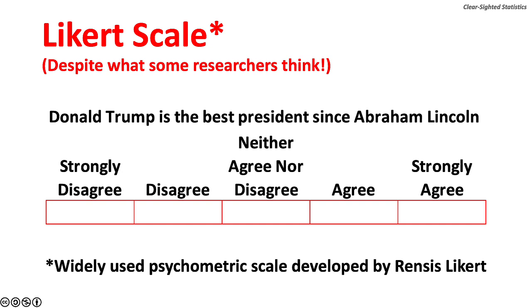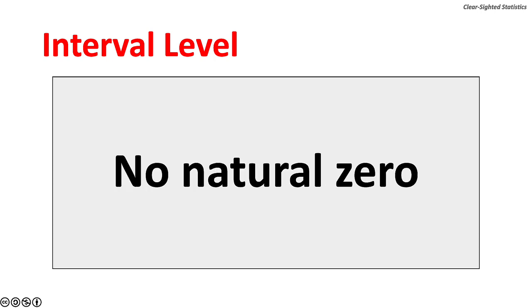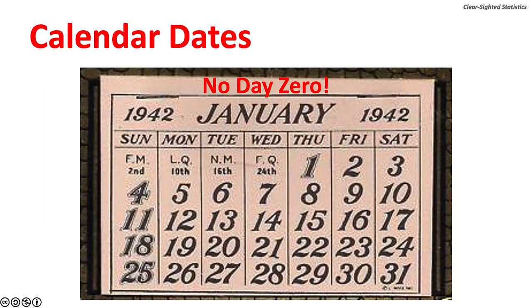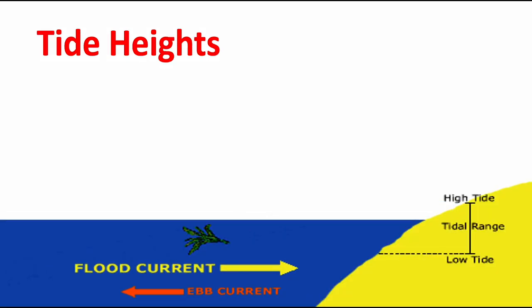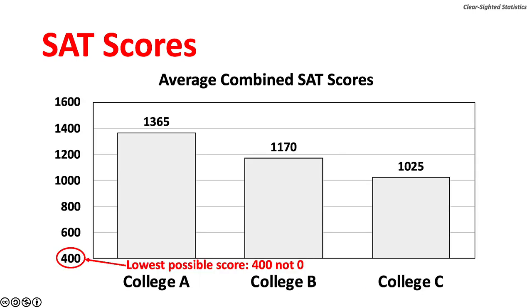The interval level is the first of two quantitative measures. It is like the ordinal scale, but quantitative differences between data values can be measured. The interval scale lacks a natural zero. Temperature measured on the Fahrenheit and Celsius scales are the classic examples of interval data. Because these scales lack an absolute zero, we cannot say a day with a 90-degree high temperature was twice as hot as a day with a 45-degree high temperature. Calendar dates, tide heights, map longitudes, and SAT test scores are also interval measures, as none of these have an absolute zero.